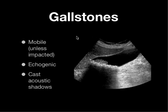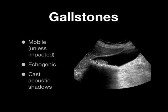What are gallstones going to look like? Unless they're impacted, they're going to be mobile. If you see gallstones, especially by the neck, you've got to do the exam in two positions to confirm mobility. They're going to be echogenic and they're going to cast clean acoustical shadows. Here you have a gallbladder that has multiple echogenic stones with clean shadowing behind it, and there's a sludge ball sitting on top. But these are all gallstones.